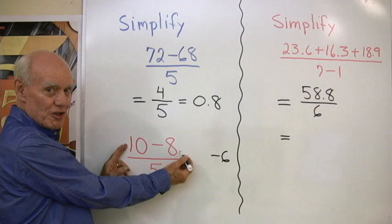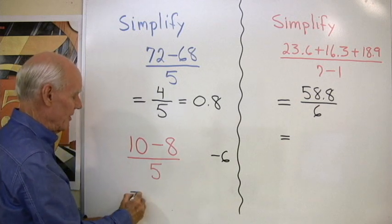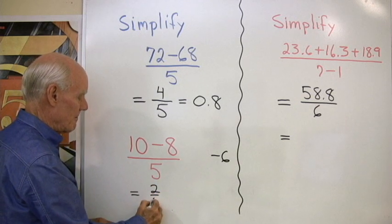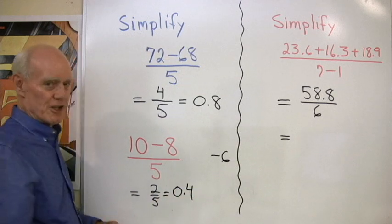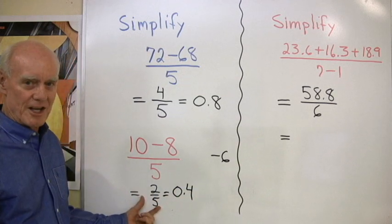because 10 subtract 8 is 2, divided by 5 is 2 fifths, which we can write as 0.4 as a decimal. So that's the correct answer.